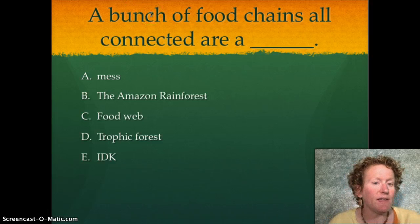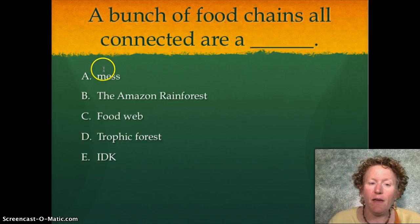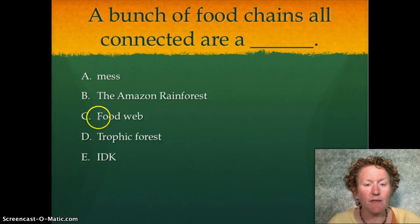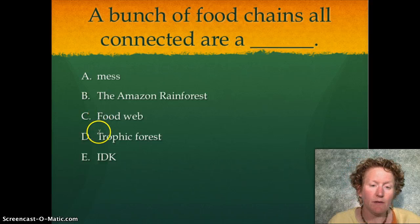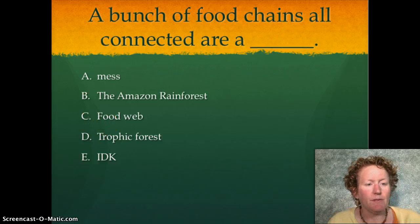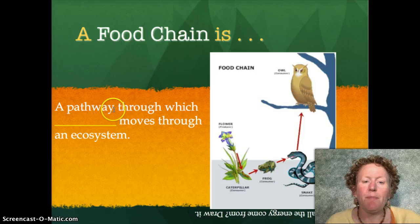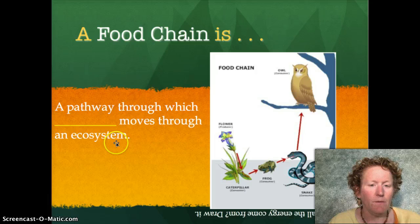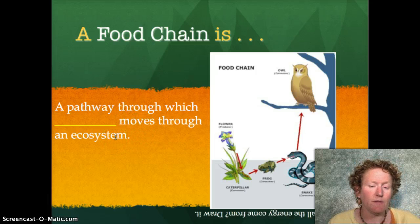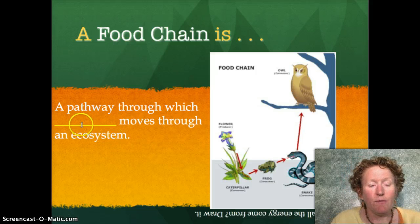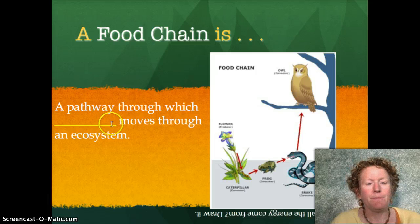A bunch of food chains all connected together are: a mess, the Amazon rainforest, a food web, a trophic forest, or I don't know? If you guessed they are a food web, you are absolutely correct. A food chain is a pathway through which energy moves in the ecosystem — that's what those arrows represent.